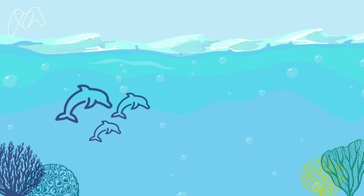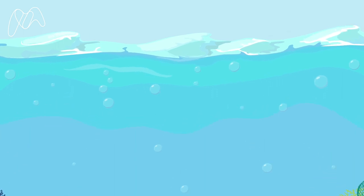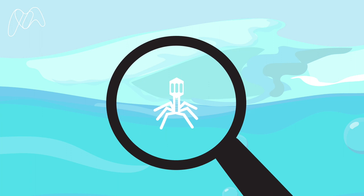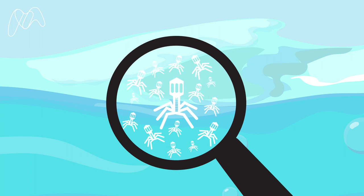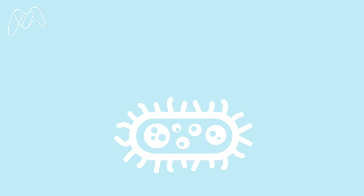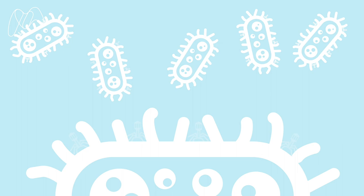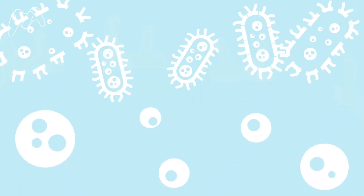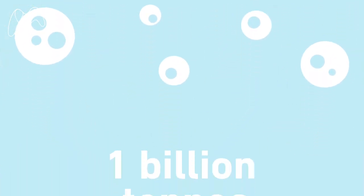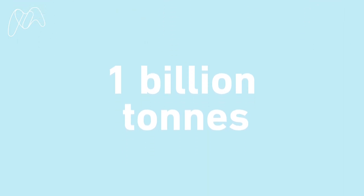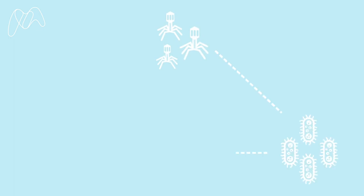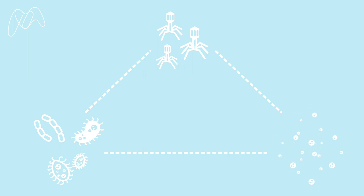When you think of ocean biology, you probably think of coral reefs or dolphins. But actually the most abundant biological entities in the ocean are viruses. There are around 10 million viruses per millilitre of surface seawater. Most of them are viruses that infect and kill bacteria, called phages. By killing these bacteria, the phages cause them to burst open and release their contents into the ocean. It's estimated that one billion tonnes of organic carbon are released into the ocean each day by viruses. In this way, phages act like marine microbial recyclers, allowing energy and nutrients to be consumed by other forms of microbial life.